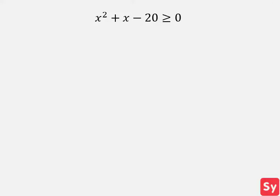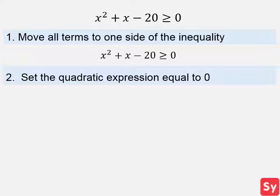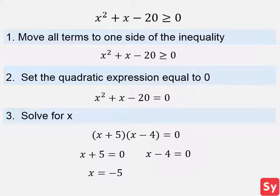Last example: we have x² plus x minus 20 is greater than or equal to 0. First, all terms are already on one side, so we move to the next step. We set the quadratic expression equal to 0, then solve for x by factoring: we get (x plus 5)(x minus 4) equals 0. Setting each factor equal to 0 gives x equals negative 5 and x equals 4.